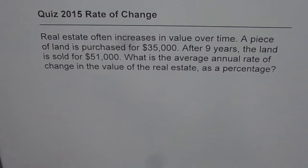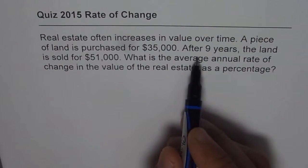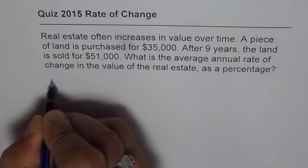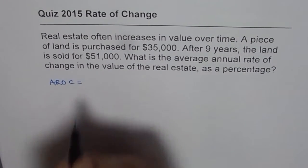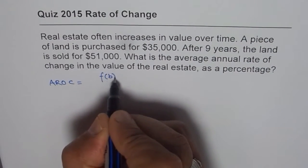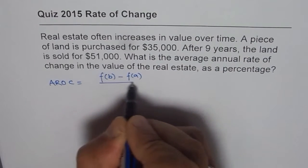This question seems to be a very straightforward question since we are given the interval and the cost. So, we say average rate of change equals the difference of two values. Let me say f(b) minus f(a) divided by b minus a.